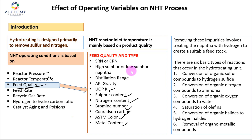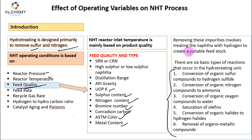I am not going to discuss much detail regarding the NHT process overview here because I've already explained that in a previous overview video — the link will be in the description box. To summarize: the main purpose of the naphtha hydrotreating process is to remove impurities present in the naphtha, primarily in the form of organic sulfur and organic nitrogen.